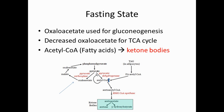Because oxaloacetate is going into the gluconeogenesis pathway, less oxaloacetate enters the TCA cycle, so less acetyl-CoA can enter. There is a buildup of acetyl-CoA, which gets diverted into ketone body production. Acetyl-CoA converts into acetoacetyl-CoA, then into acetoacetate with the help of HMG-CoA synthase, and that acetoacetate converts into ketone bodies.